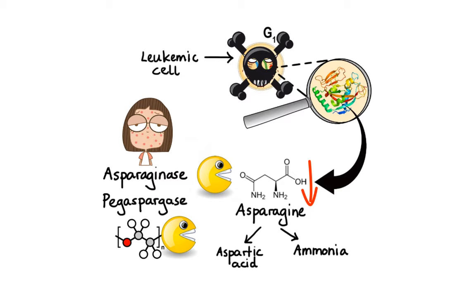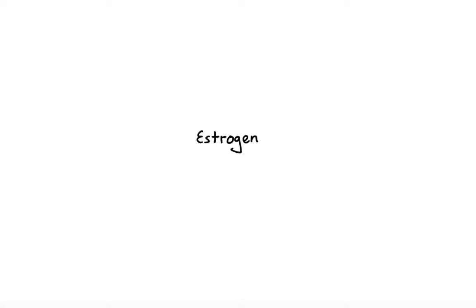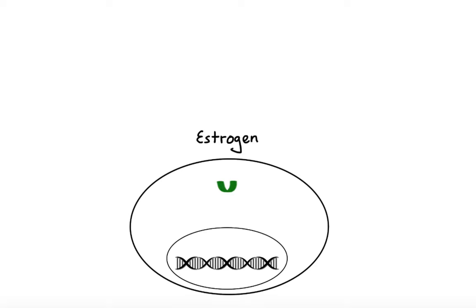The progress from G1 to S phase depends on the actions of molecular pathways influenced by hormone-regulated genes. The primary hormone implicated in the promotion of carcinogenesis, especially in tissues of the female reproductive tract and the breast, is estrogen. The majority of cellular effects of estrogen are mediated through intracellular estrogen receptors (ER). Upon binding of estrogen to the estrogen receptor in the cytoplasm, a conformational change occurs, inducing receptor dimerization. This complex is then translocated to the nucleus, where it binds to specific regions on chromatin, activating the transcription of specific genes and leading to increased cell growth and proliferation.